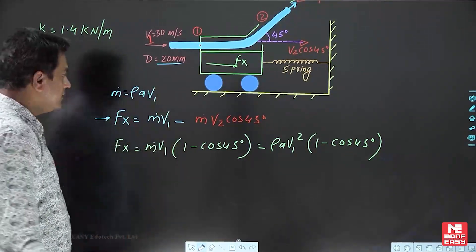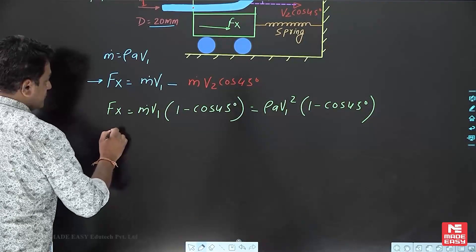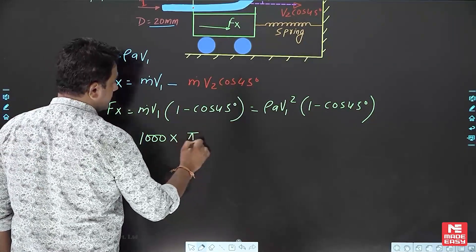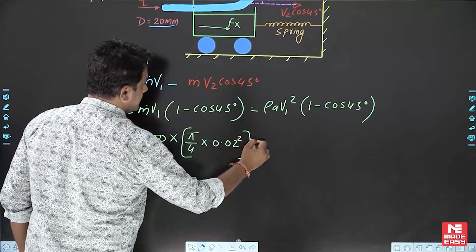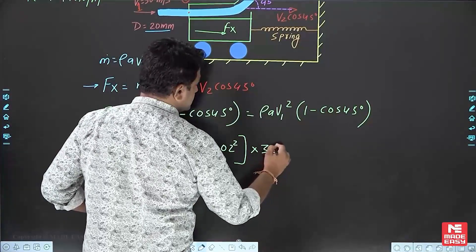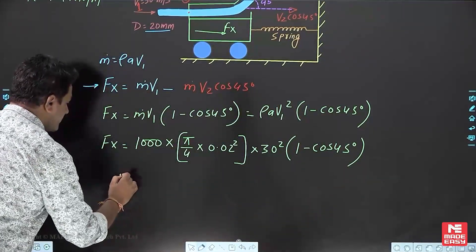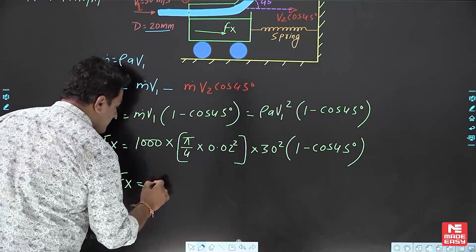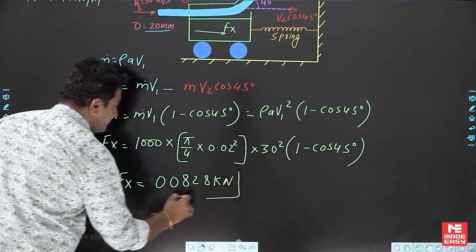Now let us calculate the force by substituting values into the equation: F = ρ·A·v1²·(1 − cos45°). Here ρ = 1000 kg/m³, area = π/4 × (0.02)², and v1 = 30 m/s. So F = 1000 × (π/4 × 0.02²) × 30² × (1 − cos45°). This gives us the force the jet applies over the car.